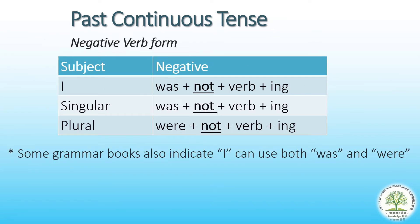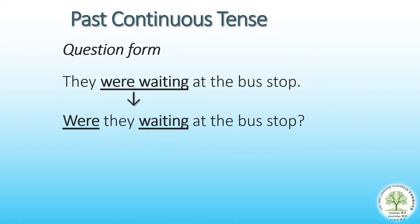For the negative form, we just add 'not' after 'was' or 'were.' Some grammar books also indicate you can use 'wasn't' and 'weren't.' For the question form, we just move the be-verb 'was' or 'were' before the subject, as you can see from the position where the be-verb and verb with -ing is located.